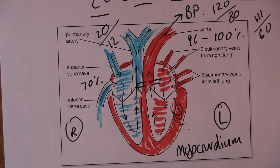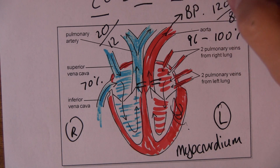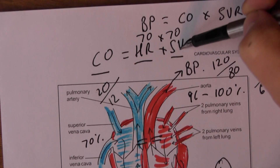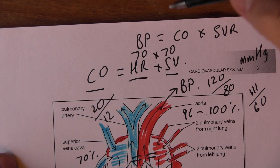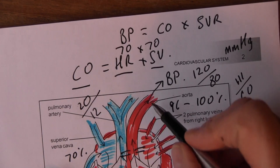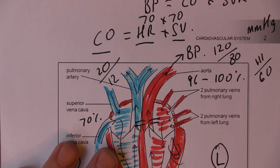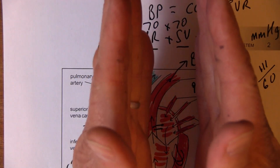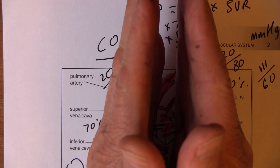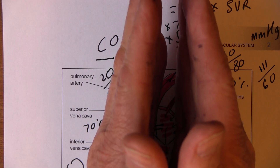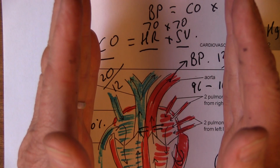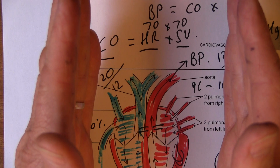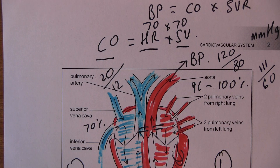Cardiac output is only one component of blood pressure — there's also systemic vascular resistance, which is the resistance generated by the entire arterial system. The more narrow the arterial system, the harder it is for blood to get through and the higher the pressure. Vasoconstriction raises blood pressure, while vasodilation widens vessels, lowers systemic vascular resistance, and therefore lowers blood pressure.